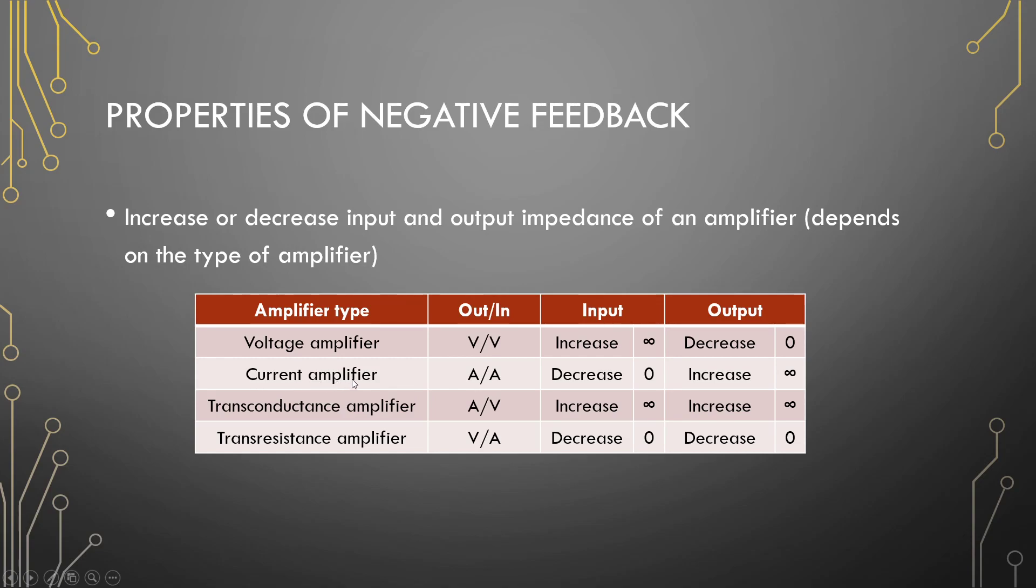Current amplifiers. So for currents, looking at a Norton model, a current source has infinite impedance in parallel with itself. For our output, we need an infinite amount of impedance available, and at the input we should have zero. Current follows the path of least resistance, so if we want current to flow into an amplifier, our input impedance needs to be zero. So the input for a current amplifier will be decreased and the output should be increased.